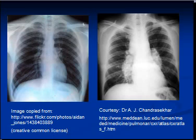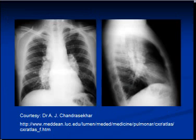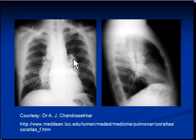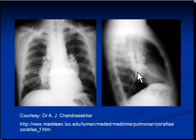Looking at another set of chest X-rays, the X-ray on the left hand side shows bilateral hilar lymphadenopathy and enlarged paratracheal lymph nodes. On the lateral view, this shows up as a hilar mass.